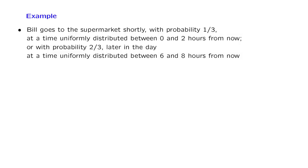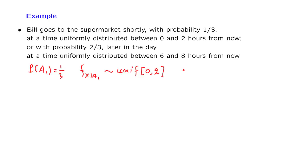Let us now look at a simple example that involves a model with different scenarios. Bill wakes up in the morning and wants to go to the supermarket. There are two scenarios. With probability 1/3, a first scenario occurs, and under that scenario Bill will go at a time that's uniformly distributed between 0 and 2 hours from now. So the conditional PDF of x in this case is uniform on the interval from 0 to 2. There's a second scenario where Bill takes a long nap and goes later in the day, with probability 2/3, and under that case the conditional PDF of x is uniform on the range between 6 and 8.